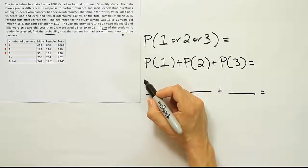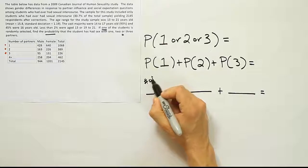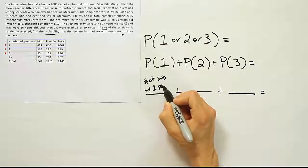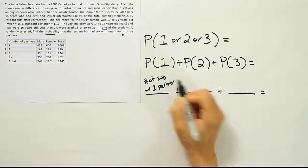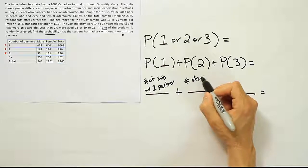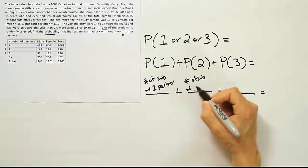What will this fraction represent? Well, it's going to be the number of subjects with one partner in their past. This next one will be the number of subjects with two partners.